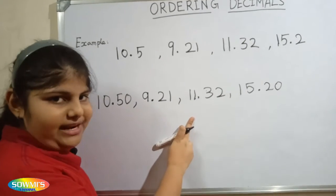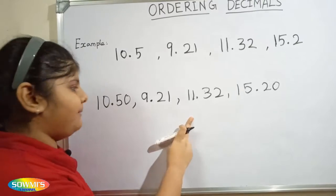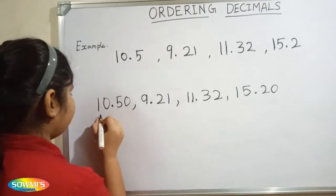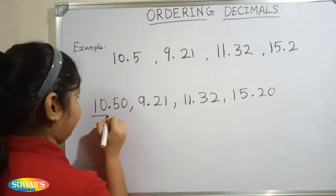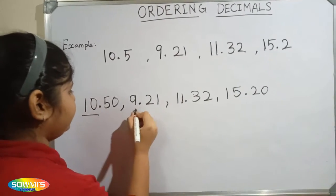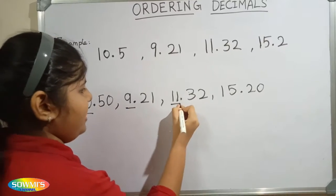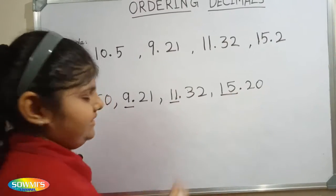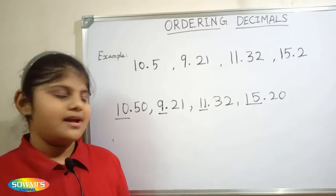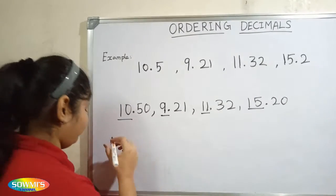Now we will check whether the whole number part is a different number or the same number. Here the whole number part is a different number, so we will compare the whole number parts: 10, 9, 11, and 15. Now we will arrange them in ascending order.